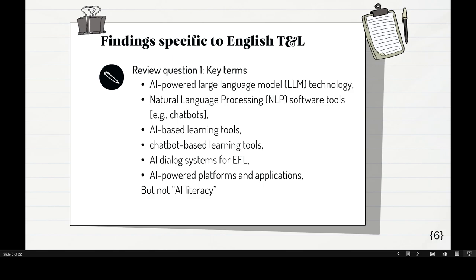For review question one — key terms — one finding is that these papers don't always call themselves Gen.AI. They can be called AI-powered language learning model, natural language processing, software tools, chatbots, AI-based learning tool, chatbot-based learning tool. There are a number of names to represent Gen.AI. One thing that never came up is AI literacy — they never relate AI literacy to the key term of Gen.AI in the literature.